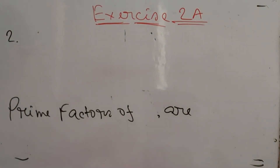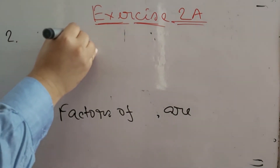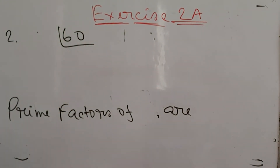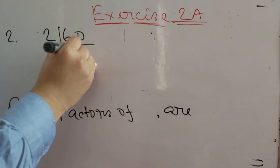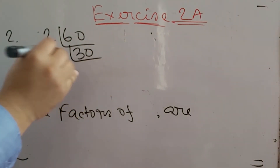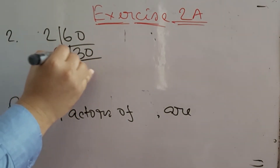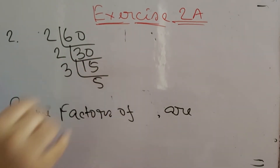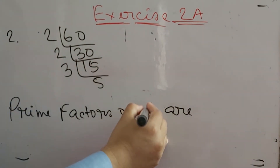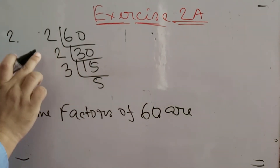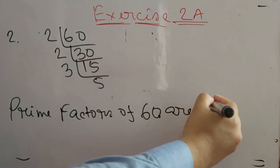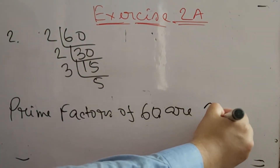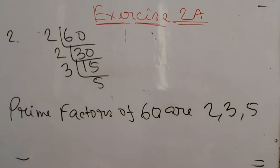Next: 60. Divide 60 by 2 to get 30. Divide 30 by 2 to get 15. Divide 15 by 3 to get 5. So the prime factors of 60 are 2, 3, and 5 — only 3 prime factors.